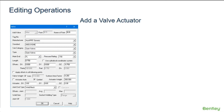AutoPipe provides the ability to input information regarding valve actuators directly in the valve dialog box. This allows for more realistic modeling of eccentric loads on the valve due to the weight and location of the actuator.